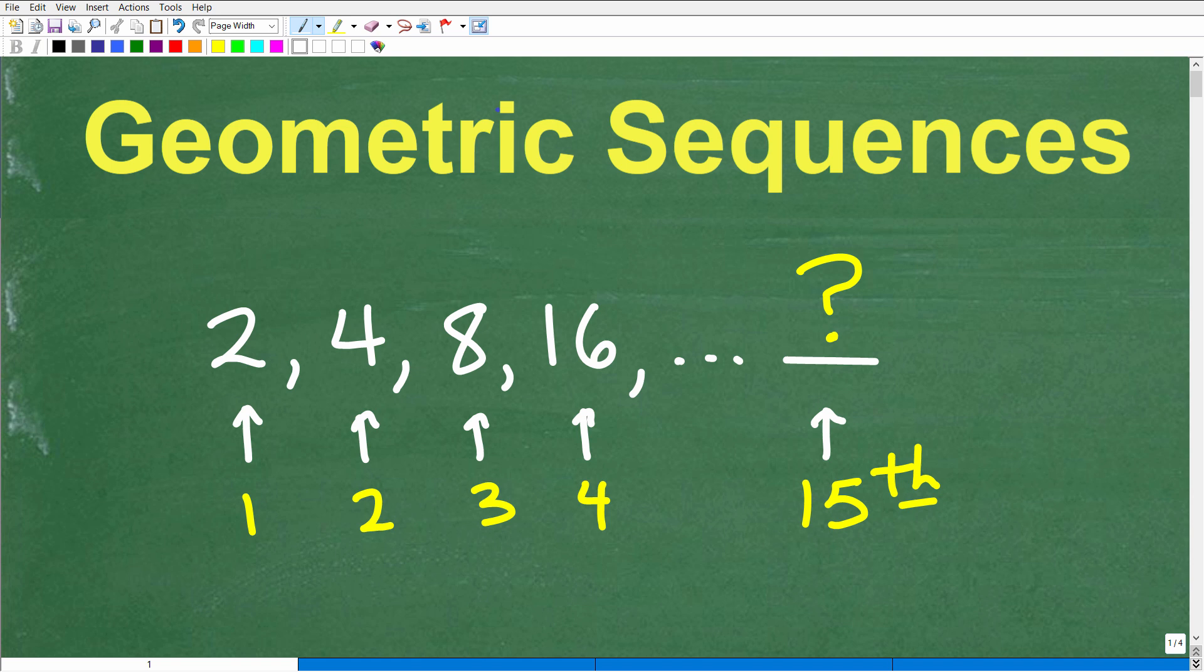So what do we have here? We have a pattern, a sequence of numbers going from 2 to 4, then 4 to 8, 8 to 16. So there is a pattern in these sequence of numbers.